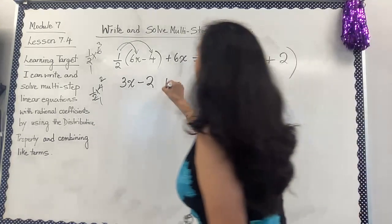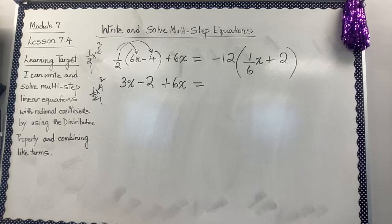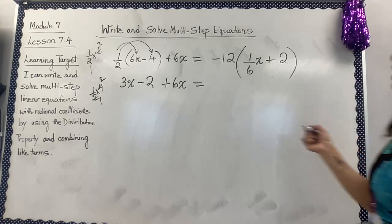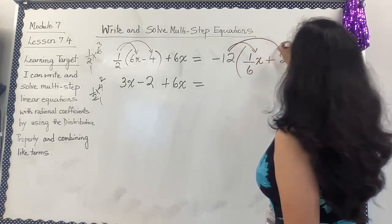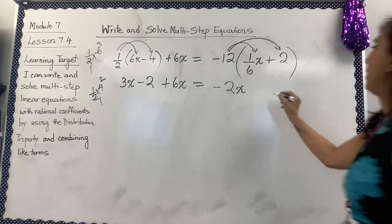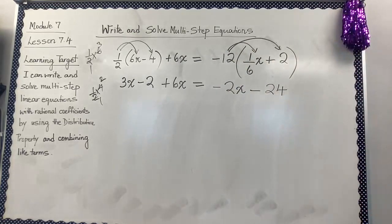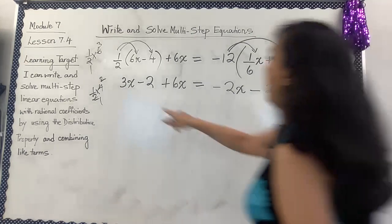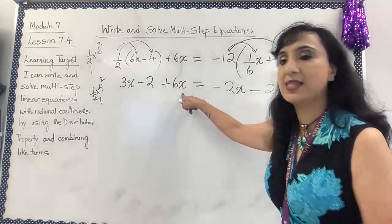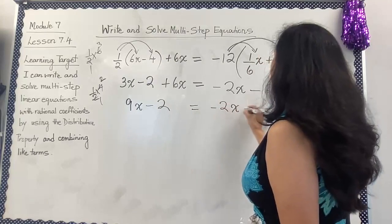On the right: negative 12 times ⅙ means negative 12 divided by 6, giving negative 2x. And ⅙ times 2 — positive times negative — gives minus 24. So after the distributive property I have 3x minus 2 plus 6x equals negative 2x minus 24. Combining like terms 3x and 6x gives 9x, so 9x minus 2 equals negative 2x minus 24.